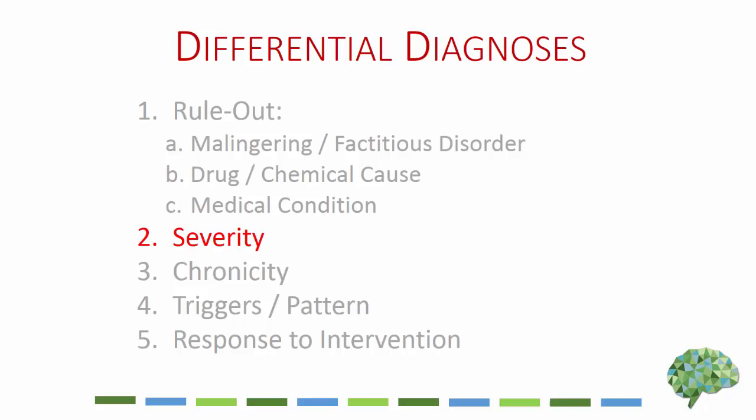The next issue to consider is the severity of the symptoms or behaviors, which will help us focus in on one or another of the diagnoses we're trying to differentiate. Severity goes along closely with the chronicity of symptoms — that is, how long the person has had them. And one extremely important issue is whether there are triggers, and if so, what are they — and whether there's a pattern to the symptoms and behaviors. That's actually more important than severity and chronicity. We'll spend time in the history asking about when the person has these symptoms, when they're worse, and when they're not.